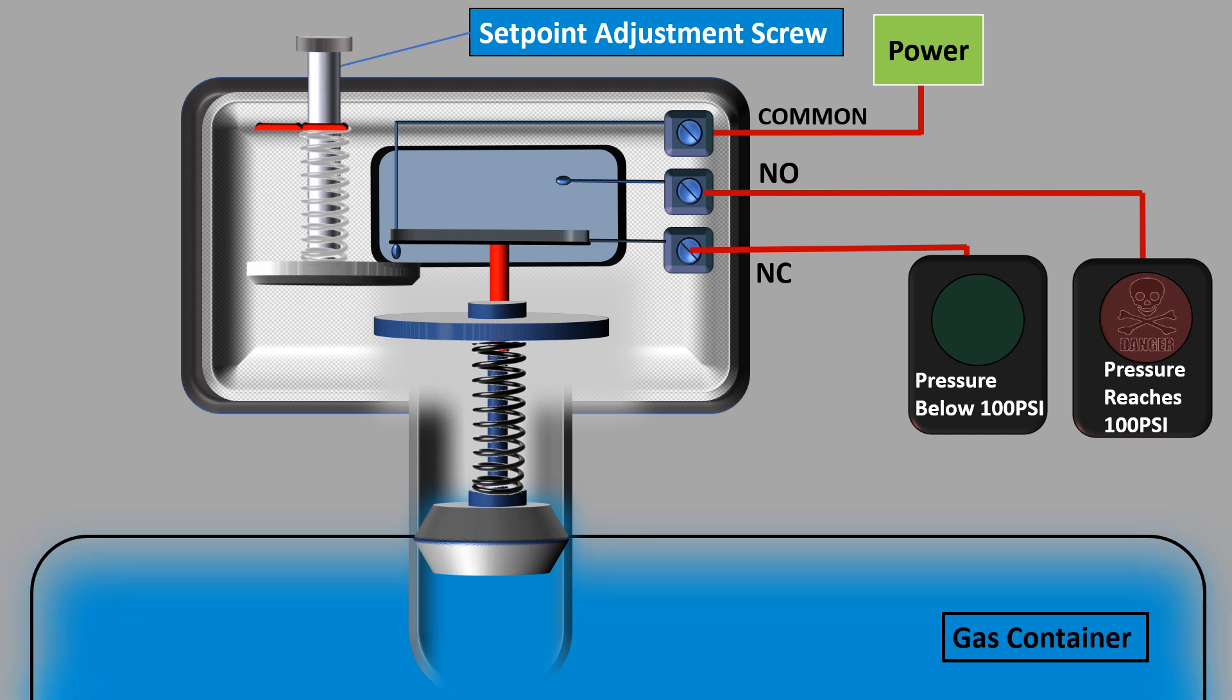During normal operation, when the pressure inside the container is below 100 psi, the normally closed circuit will be powered and green light will be on.